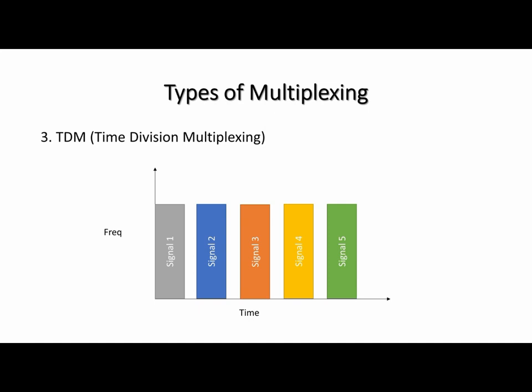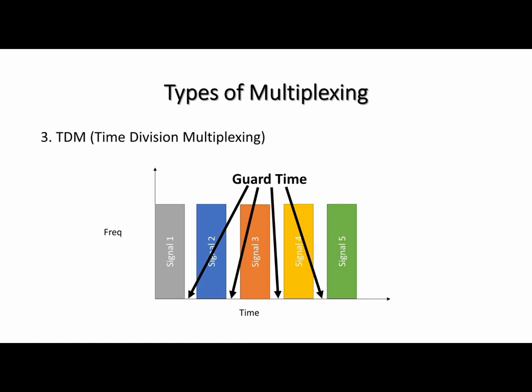For example, suppose you have eight bits of data and each single bit takes one microsecond to transmit, so eight bits require eight microseconds. If the sampling period is 100 microseconds, after sending the 8-microsecond data burst you have around 92 microseconds of empty time in the channel. This 92 microseconds is used for other users to transmit in their allocated time slots — each gets eight microseconds. After 100 microseconds completes, the first user again gets their eight-microsecond time slot for data transmission.